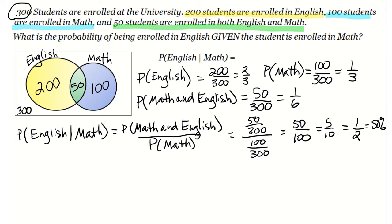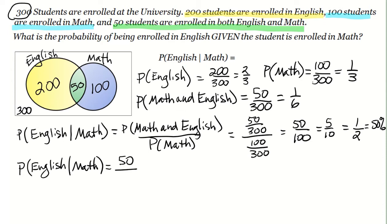Using the Venn diagram, we can do the same thing. For P(English | math), we take the intersection value — the 50 in the green intersection — and divide it by the probability of math, which is the blue circle value of 100. That gives us 50/100, which simplifies to 1/2, or 50%.